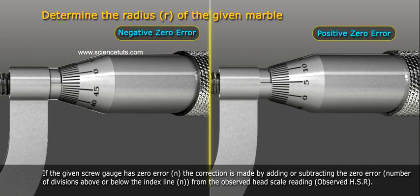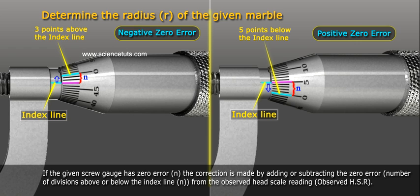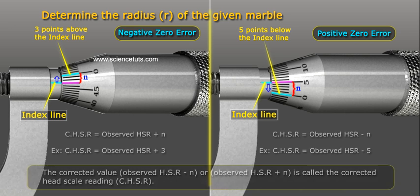If the given screw gauge has zero error n, the correction is made by adding or subtracting the zero error number of divisions above or below the index line n from the observed head scale reading. The corrected value, observed HSR minus n or observed HSR plus n, is called the corrected head scale reading CHSR.